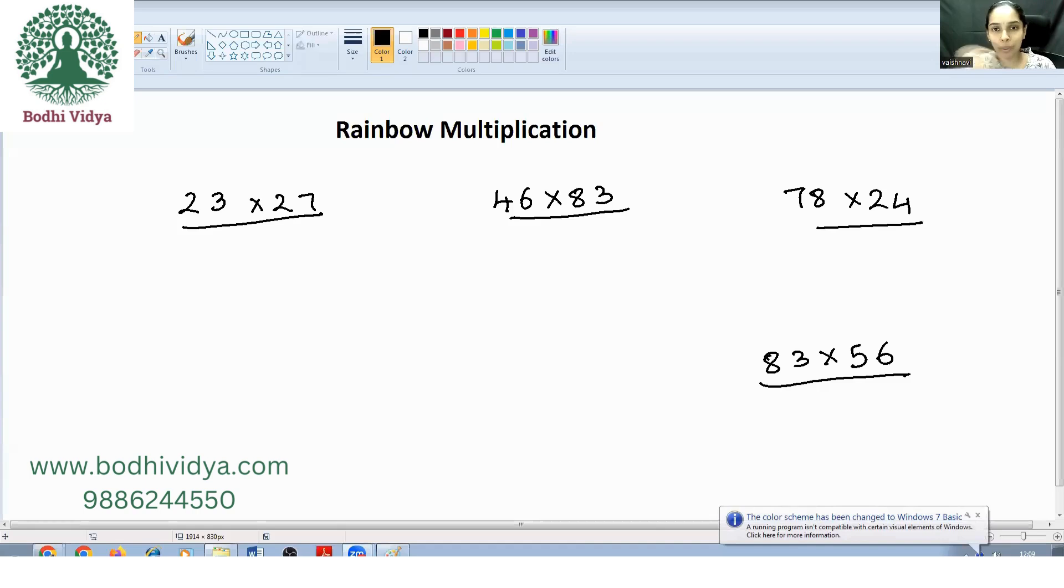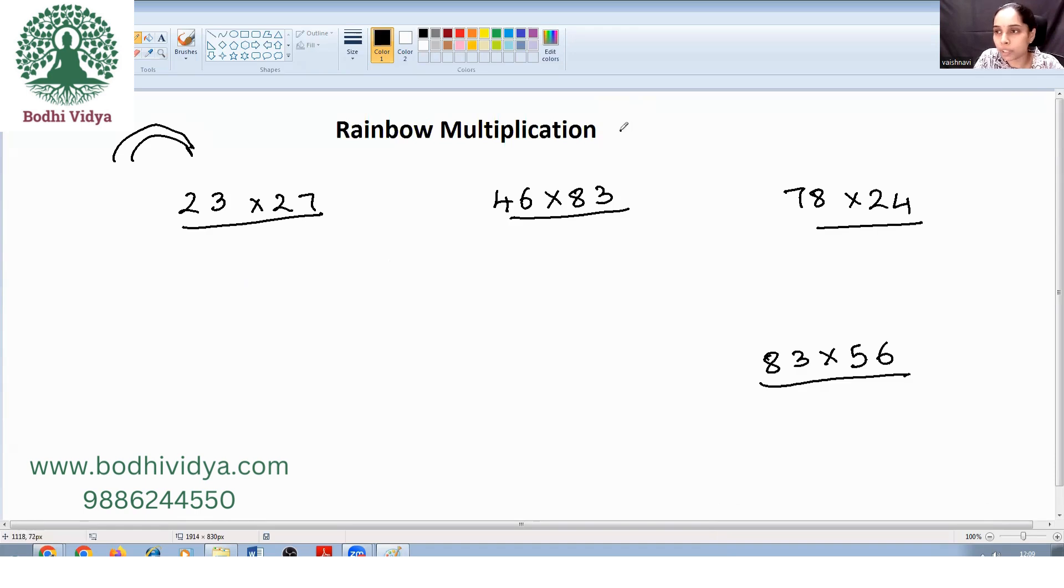So we all know rainbow is like two arches, right? This is what we call it as rainbow. So we use this rainbow kind of thing while multiplying. This method can be used to multiply any two digit numbers.